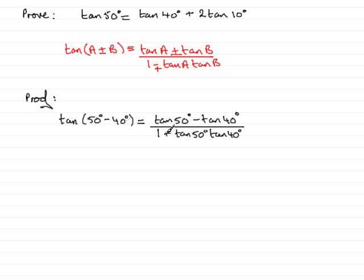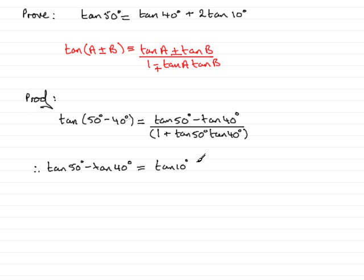If I multiply both sides by the denominator — that is, 1 plus tan(50°)·tan(40°) — and rearrange, I get: tan(50°) minus tan(40°) equals tan(10°) multiplied by the quantity 1 plus tan(50°)·tan(40°).